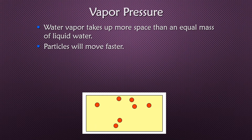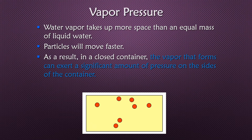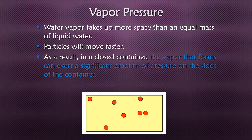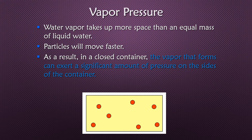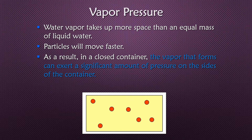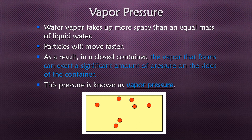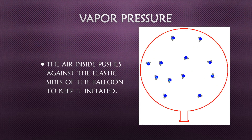Because the gas particles have more space to move, they will move faster and have more motion. If we put this gas in a closed container, those vapor particles will collide with and hit the walls of the container, producing a significant amount of pressure. That pressure is what we call vapor pressure.